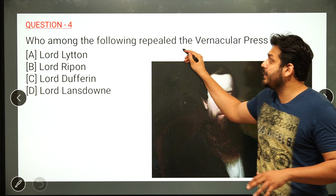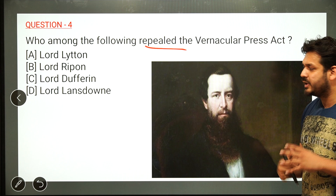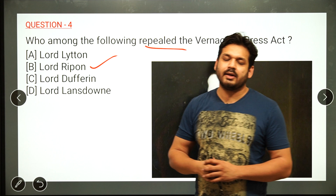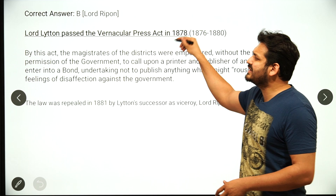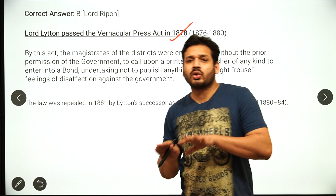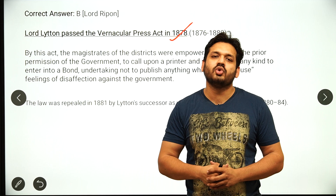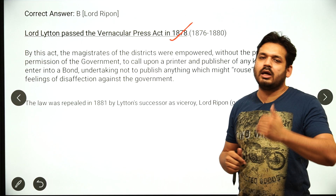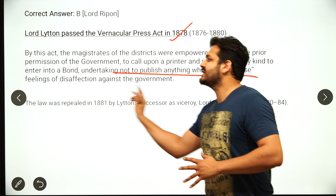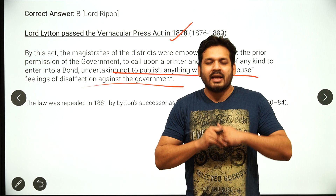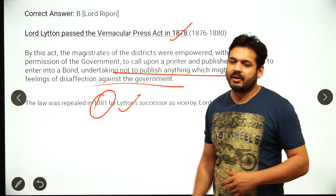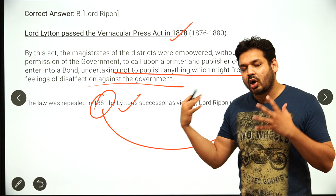Next question: who repealed the Vernacular Press Act? One option is Lord Lytton, but that is wrong — Lytton imposed it. The Vernacular Press Act was imposed in 1878 by Lord Lytton. This act prevented local vernacular newspapers from publishing anything against the government, restricting freedom of the press. The act was repealed in 1881.